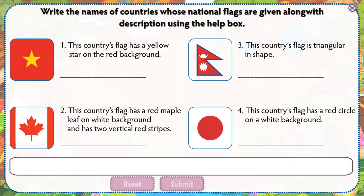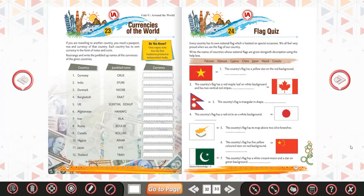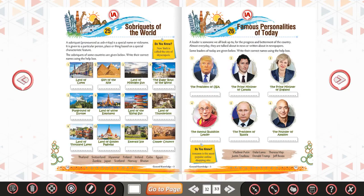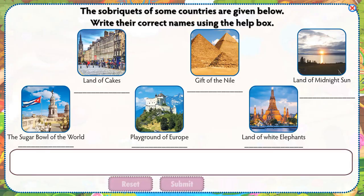Write the names of countries whose national flags are given along with description using the help box. The sobriquets of some countries are given below. Write their correct names using the help box.